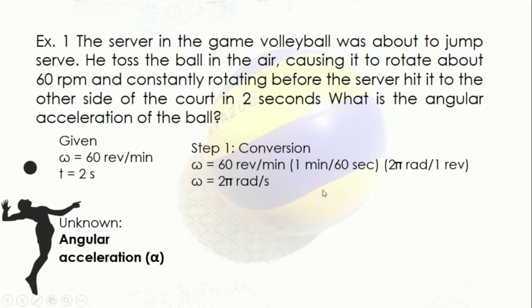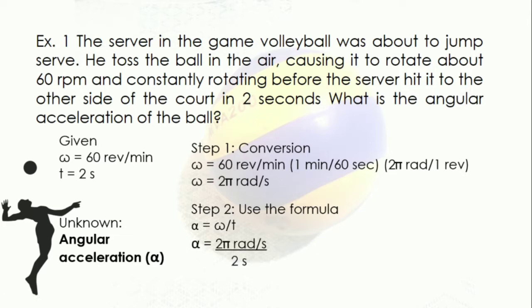We get 2π rad per second. Next, using the formula alpha equals angular velocity over time, we plug in the values and get 3.1416 rad per second squared as the angular acceleration of the ball.